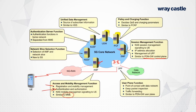The SMF still has a relationship with the user plane part of the network — the User Plane Function. You'll recognize many of its responsibilities: session management signaling towards the UE, starting, stopping, and modifying sessions. It's also where IP addresses are allocated to the mobile — IPv4 and IPv6 — and it is the management entity for the User Plane Function, telling it to start, stop, and modify sessions.